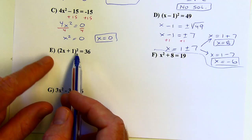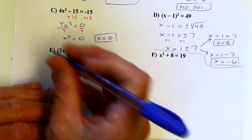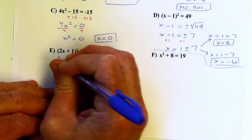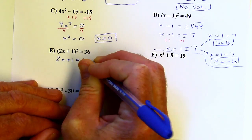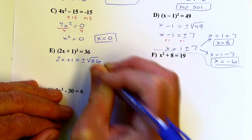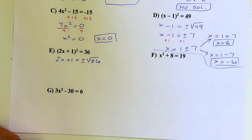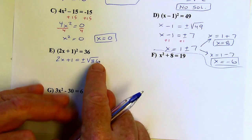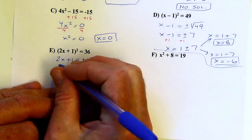Let's try another one. First I want to get rid of the exponent, so I'll take the square root of both sides. And don't forget — every time you take the square root of both sides of an equation, get that plus or minus symbol. Square root of 36 is 6.